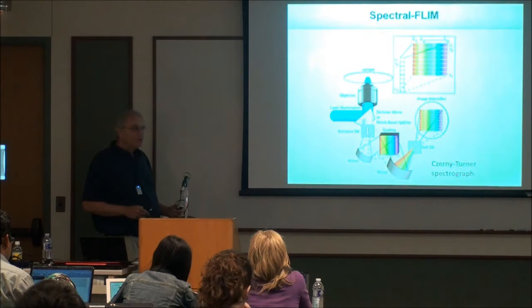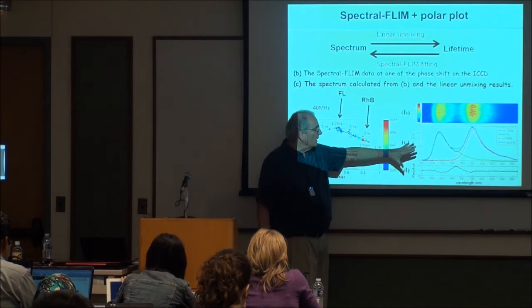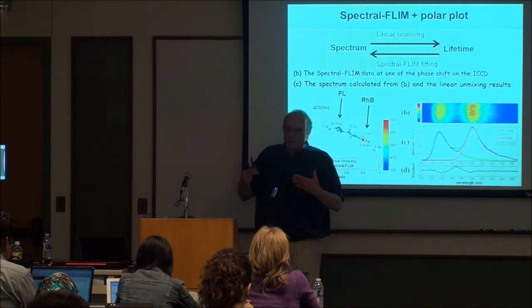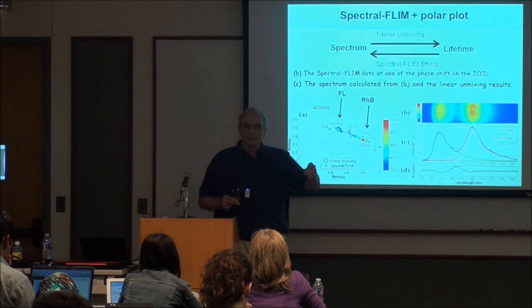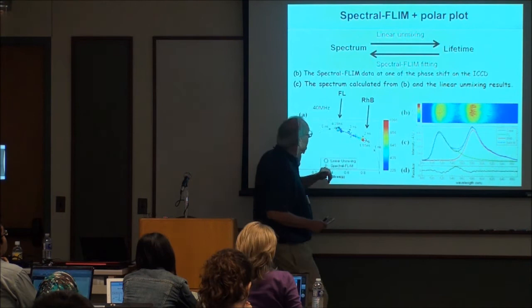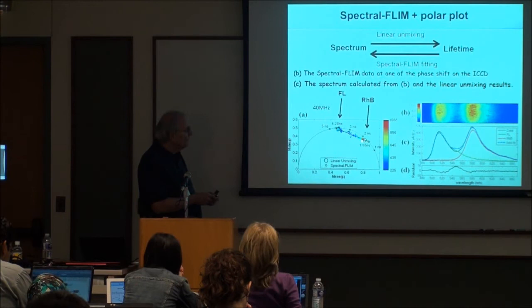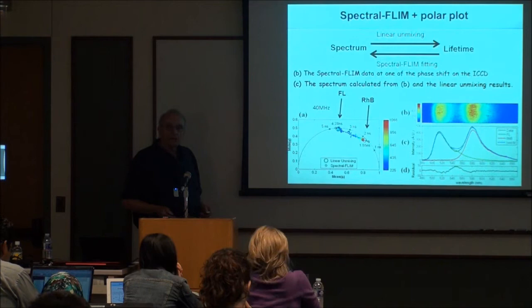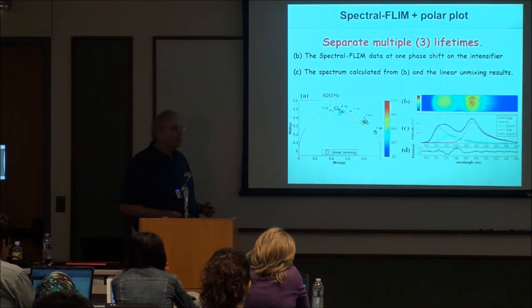One more thing: spectral FLIM. You can couple this with spectra — so if I have fluorescein and rhodamine in solution, I take a spectrum and lifetime data at the same time. At every pixel of my picture, I'm getting spectral information and lifetime information simultaneously. Here we have fluorescein, here we have rhodamine, and in between they're mixed. I can combine the lifetimes in the image with the spectra and use that information — I can even analyze three dyes in certain situations.